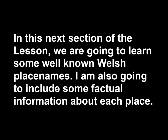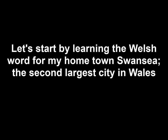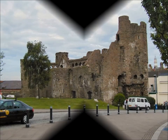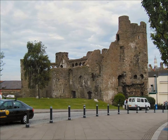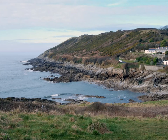In this next part of the lesson we are going to learn some well-known Welsh place names, and I'm also going to include some factual information about each place. Let's start with the Welsh word for my hometown, Swansea — the second largest city in Wales and the birthplace of Dylan Thomas. It includes a maritime quarter and the new multi-million pound campus for Swansea University. Nearby is the Gower Peninsula, the first designated area of outstanding natural beauty in the United Kingdom. So Swansea in Welsh is Abertawe.